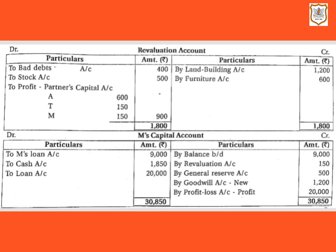Starting with the first point: the value of land and building and furniture is to be increased by 10%. The value of land and building is increasing by 1,200, as in the balance sheet it is shown at rupees 12,000 and 10% of 12,000 is 1,200. We record it on the credit side as it is an asset increasing in value. Second point: cost of stock is rupees 5,500. In the balance sheet stock is shown at 6,000, so the value is decreasing and will be recorded on the debit side of the revaluation account.